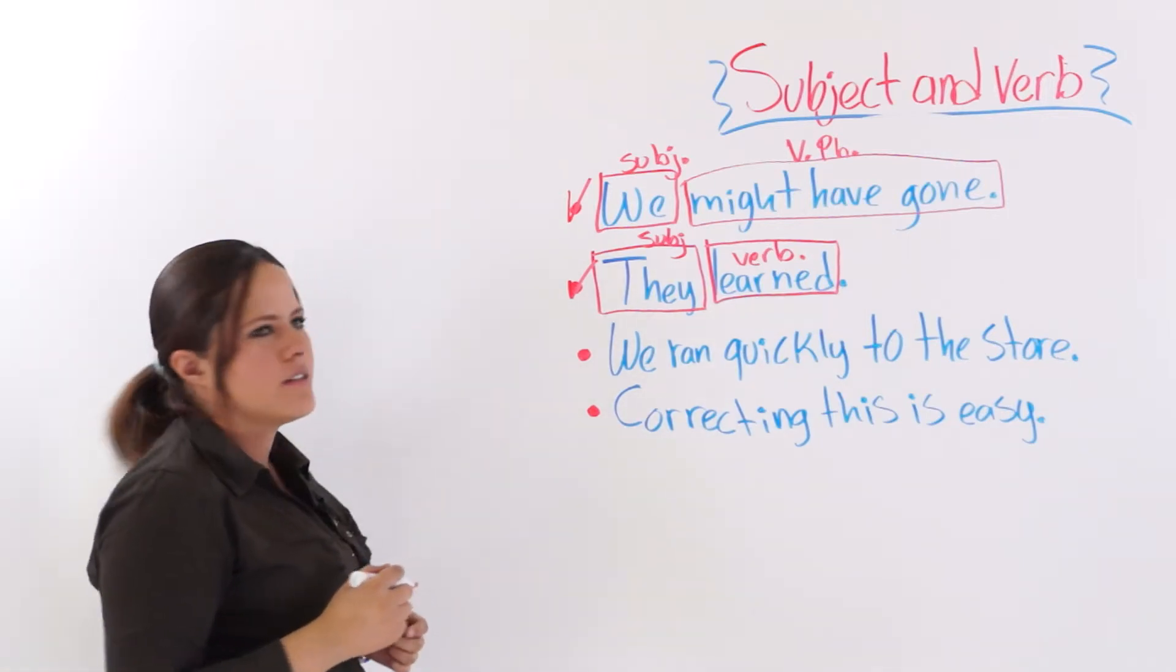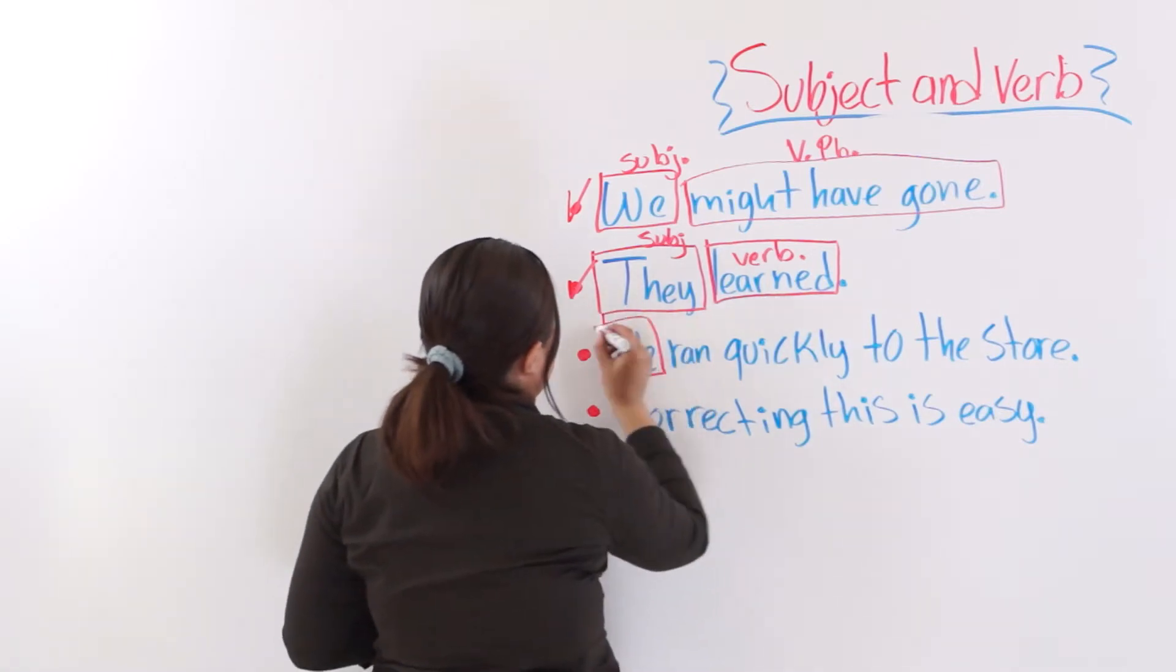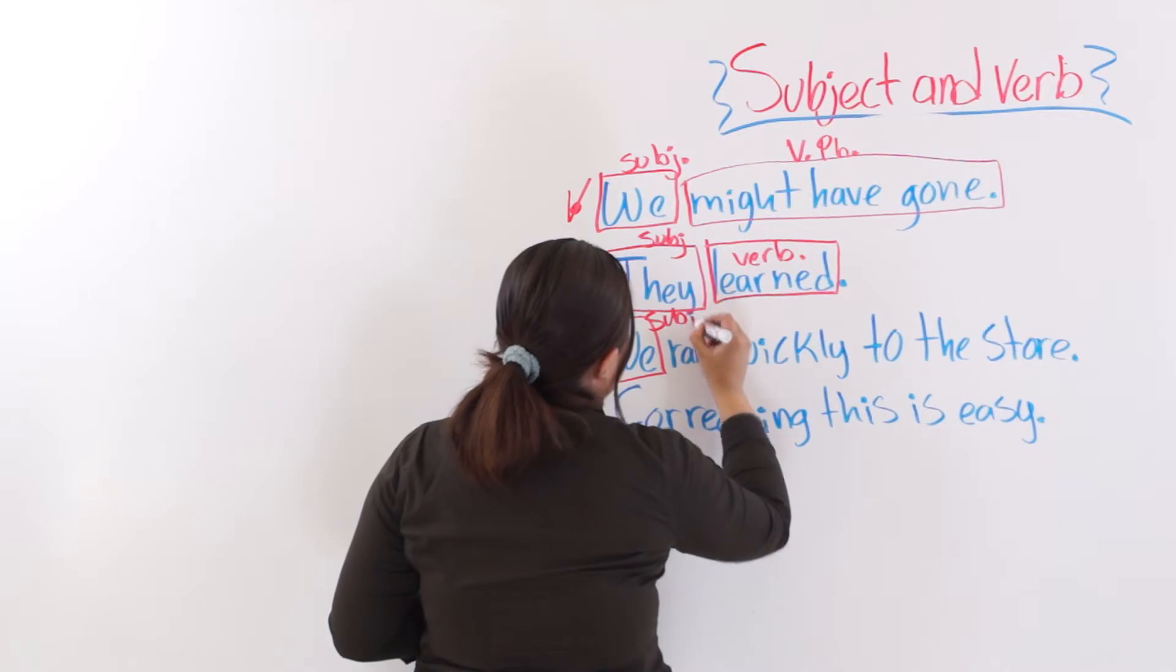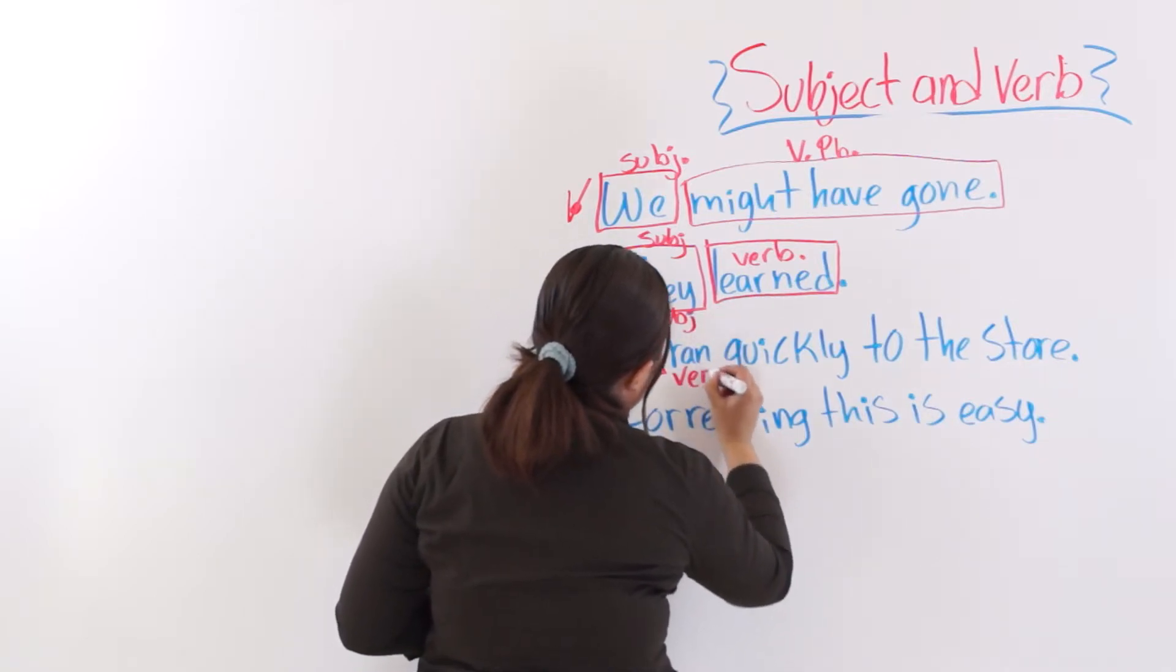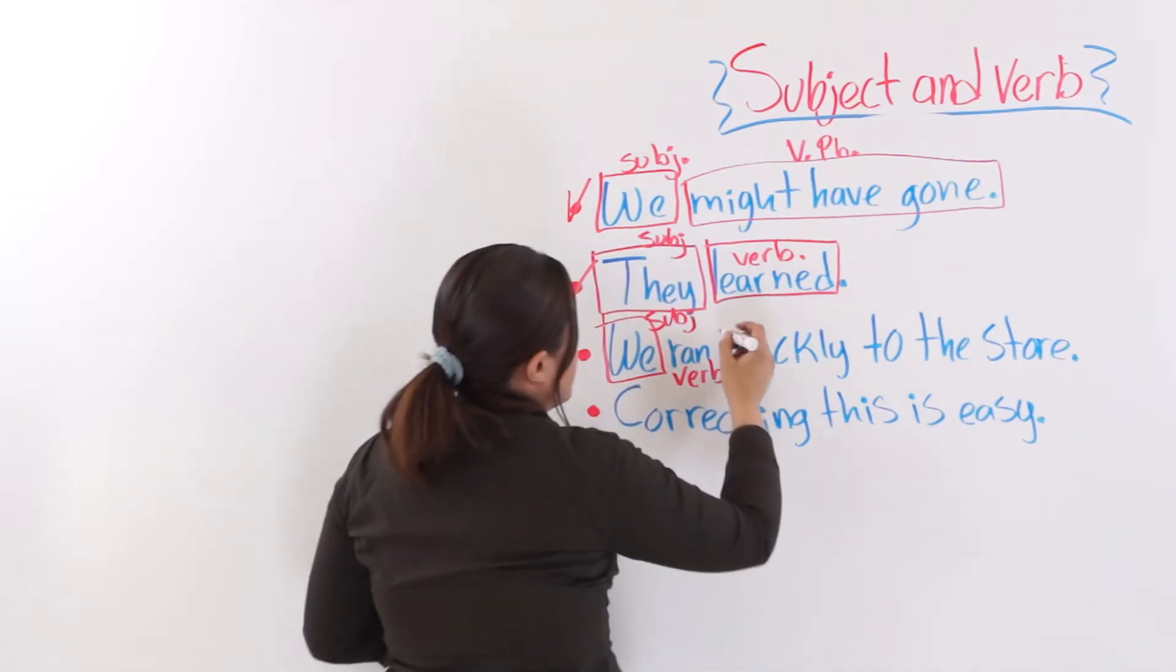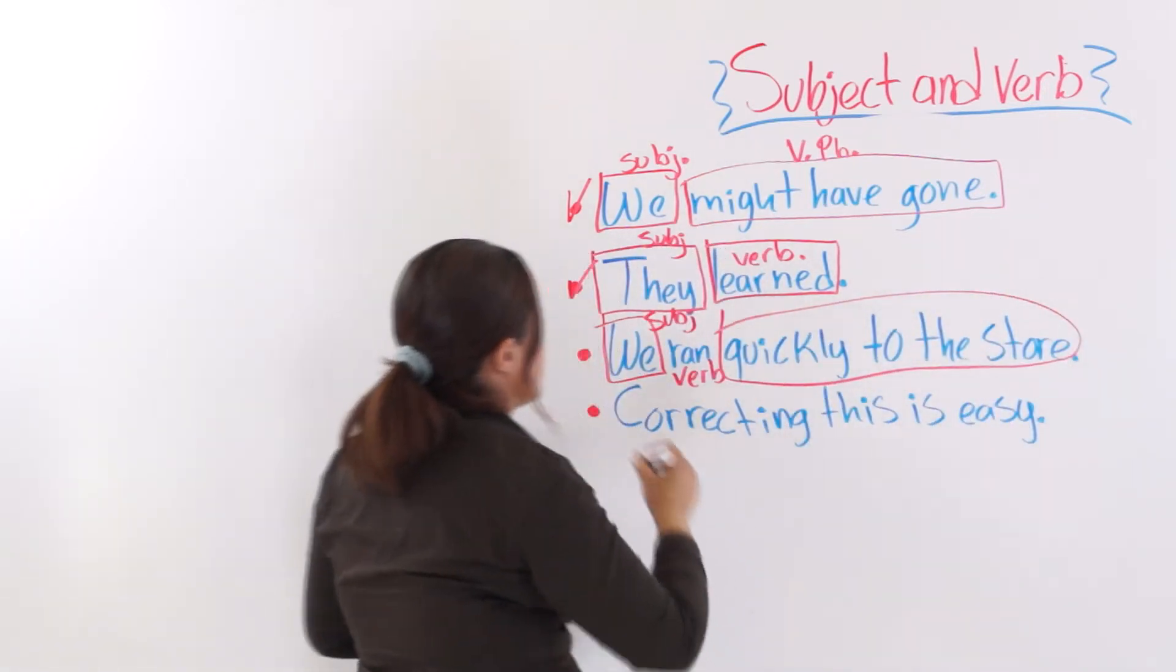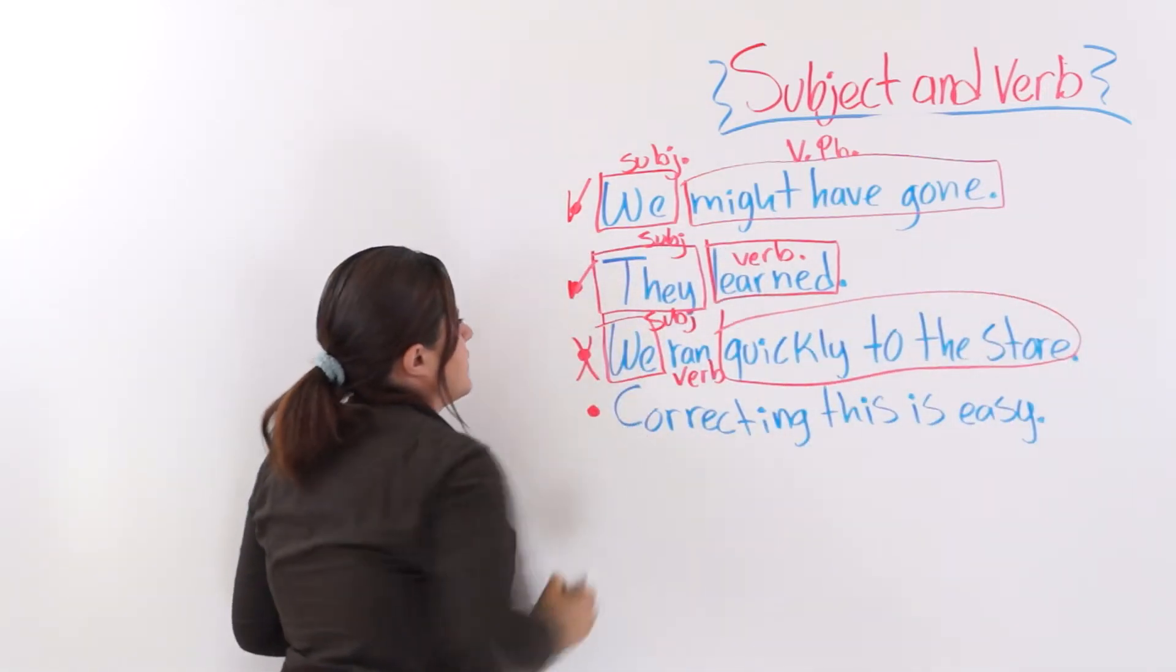The next one says, we ran quickly to the store. We have the subject. We have the verb, ran. But here we have a complement to the sentence. So this is not a subject verb sentence.